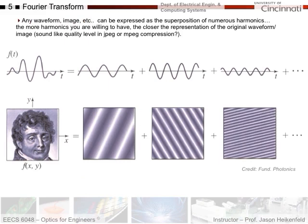Any waveform, image, etc. can be expressed as a superposition of numerous harmonics — not just a square wave, but even an image. Here's a waveform expressed as a combination of multiple harmonics, and here's an image that could be represented as a superposition of multiple harmonics interfering. This is important for image compression: instead of mapping out every exact dot, you can approximate it using these harmonics — essentially just phase and frequency — which is far less information.